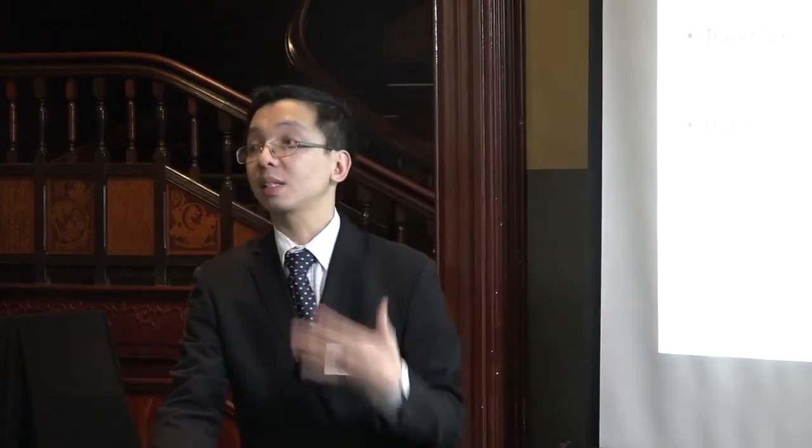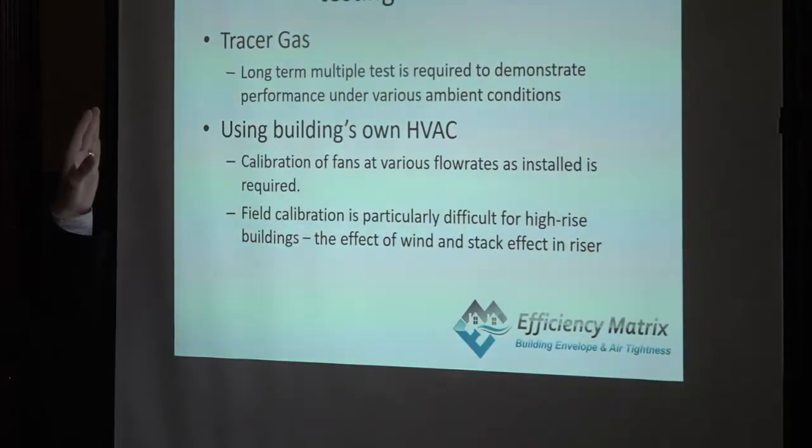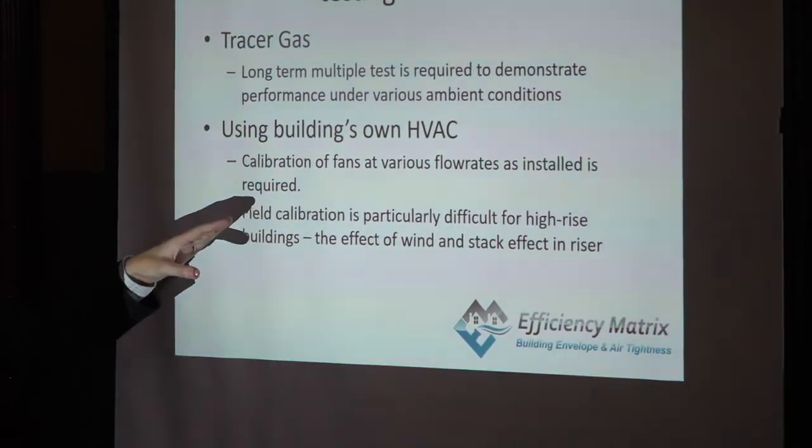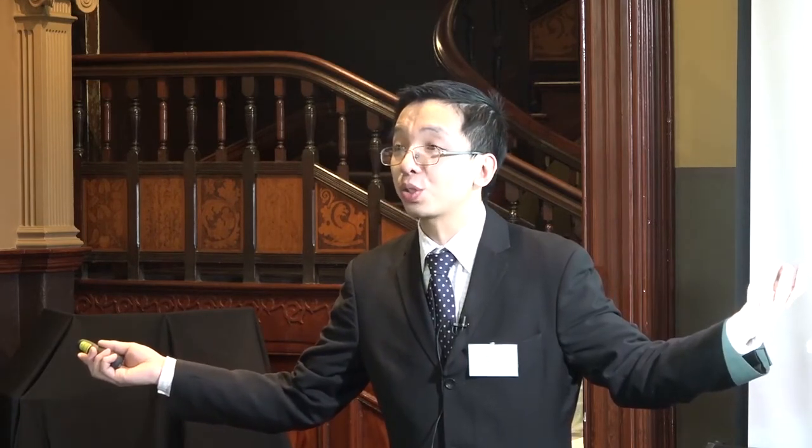Using the building's HVAC system is convenient since you've already paid for it, but it can't give you a quantifiable number with the required accuracy. Most fans are not calibrated — they have a nominal performance. Even if you calibrate a fan before installation, you can't account for the pressure drop from the ductwork. And if you calibrate after installation in the building, the ambient wind will mess things up completely. It's good for indicative performance, but it can't give you a definitive number.